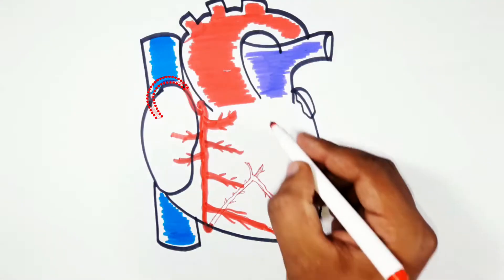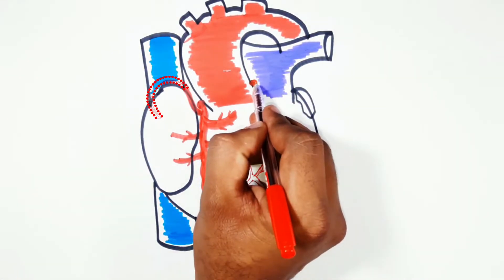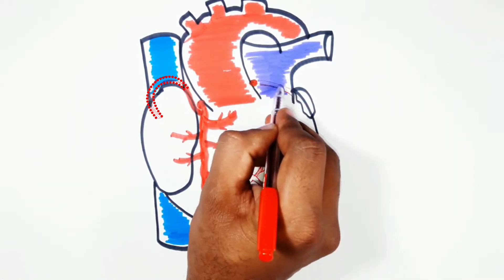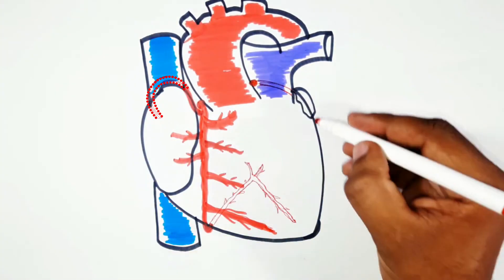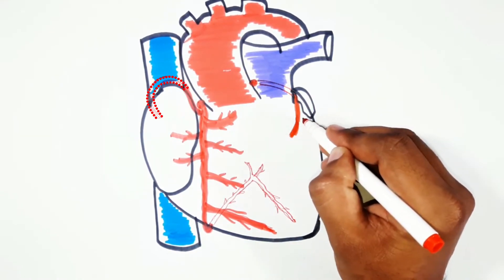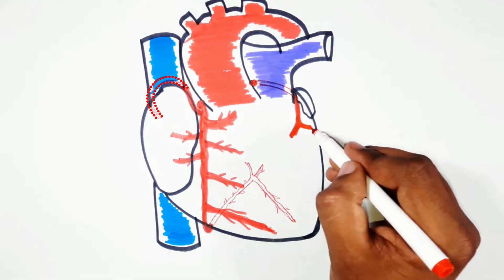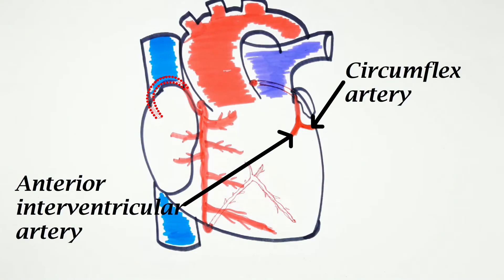The left coronary artery arises from the left posterior aortic sinus. It runs behind the pulmonary trunk to emerge between the left auricle and the infundibulum of the right ventricle. It divides into its two terminal branches after this short course: the circumflex artery and the anterior interventricular artery.